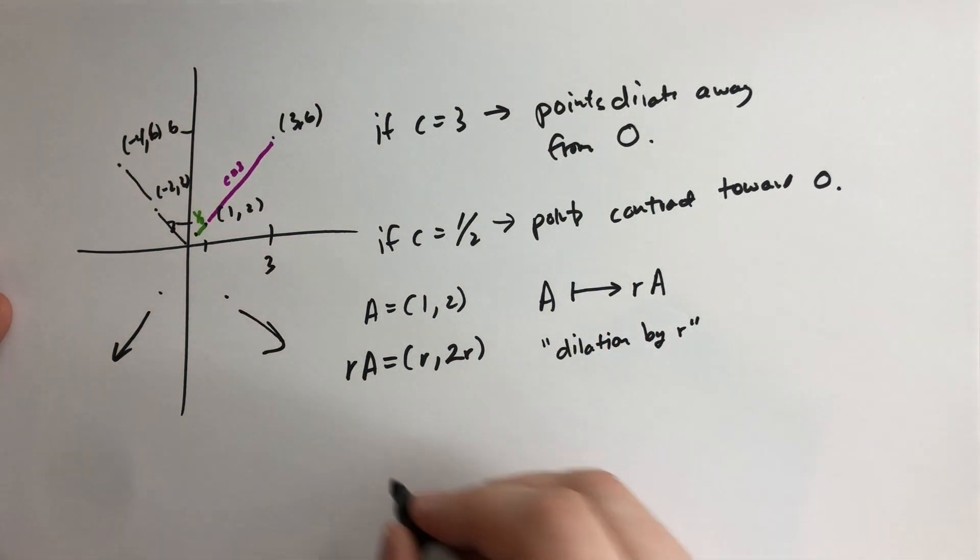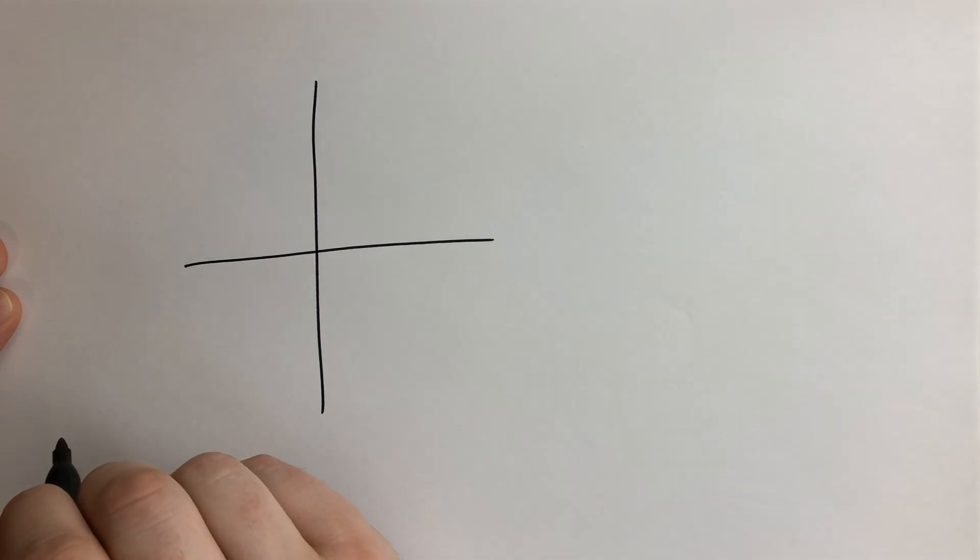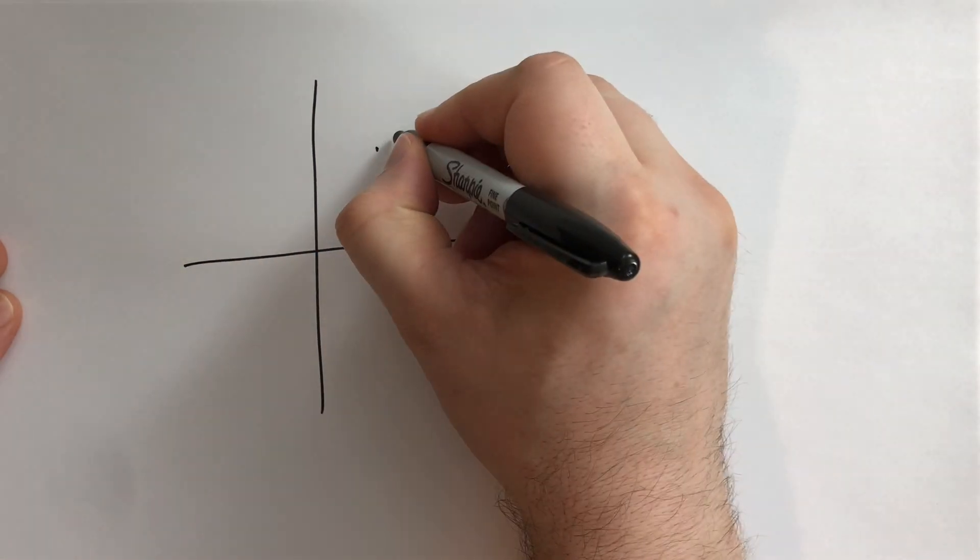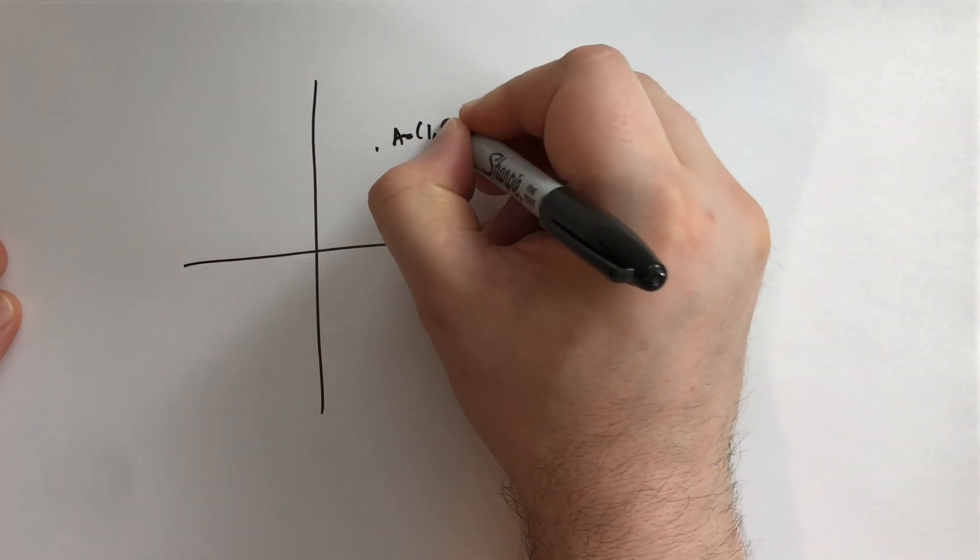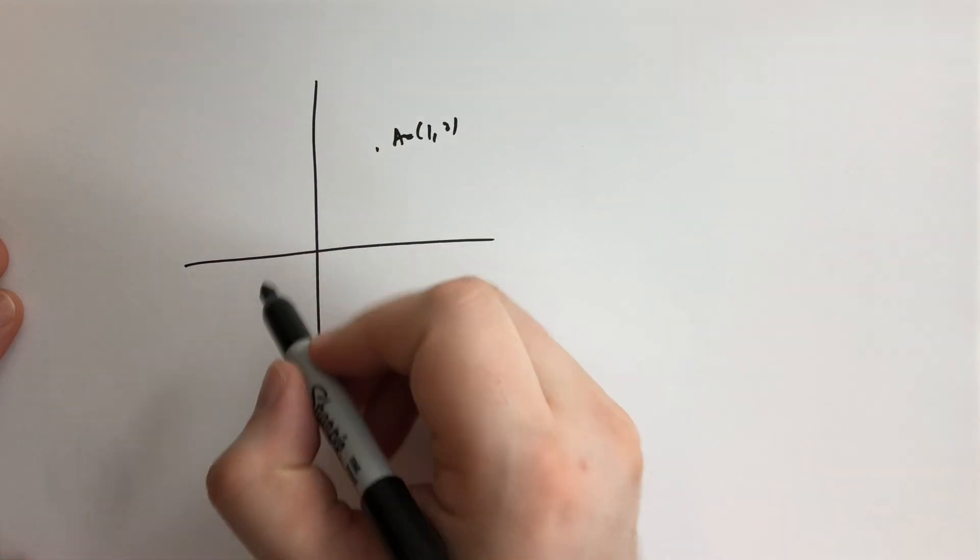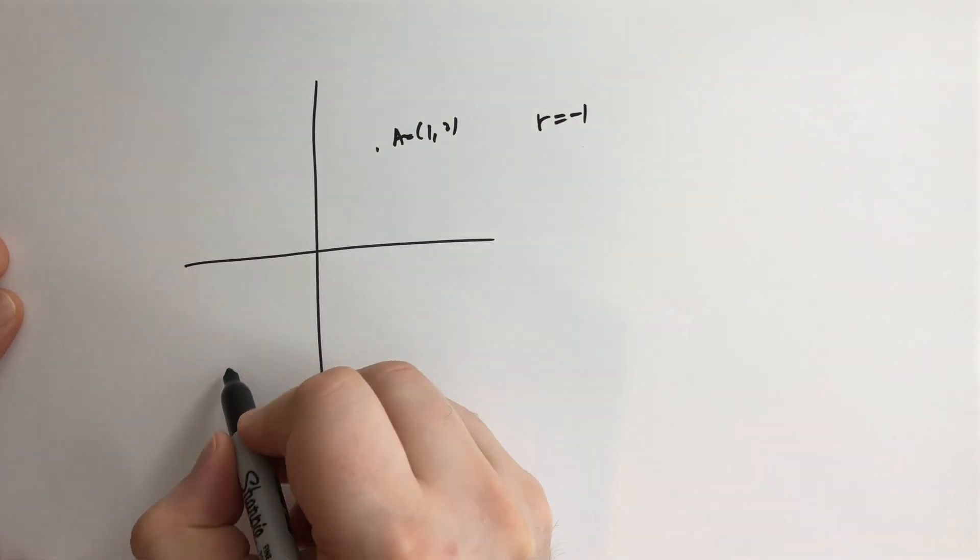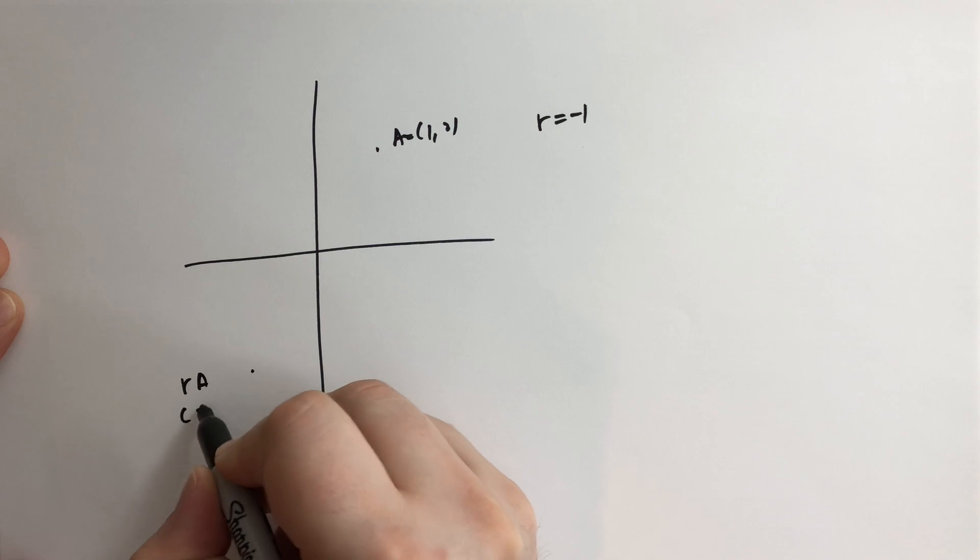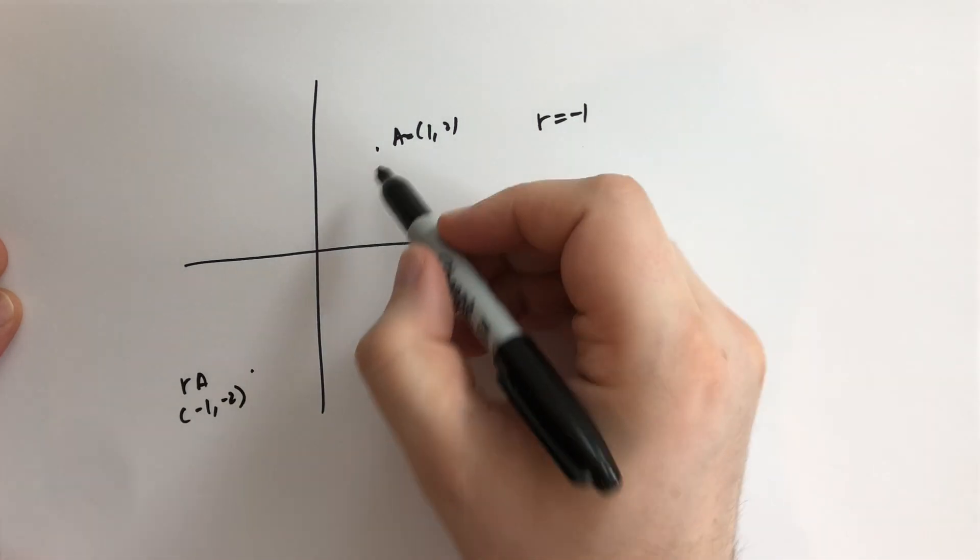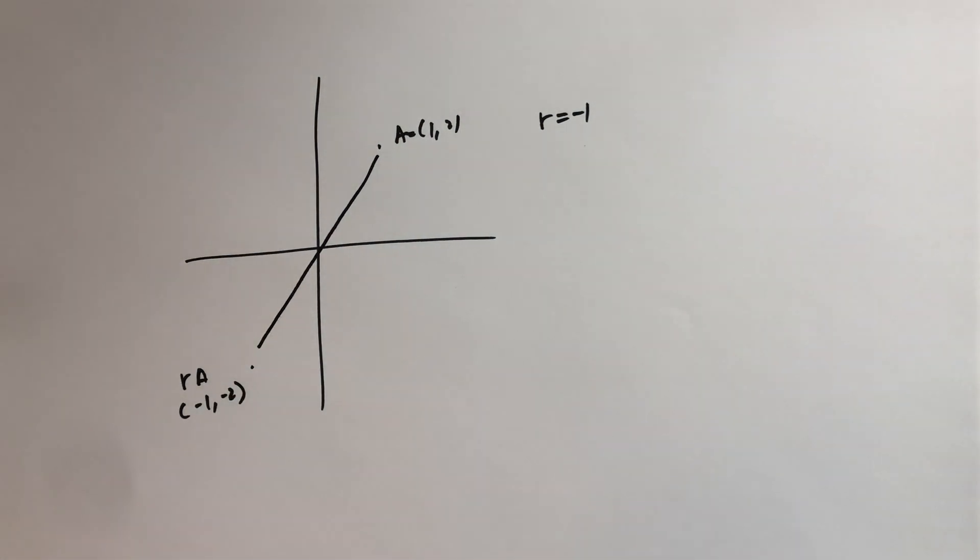What if we have R equals minus 1? Let's draw it and grab a new piece of paper. Let's play around with that. So here's our coordinate axes. Let's take the point A equals 1 comma 2. If we multiply by negative 1, so R equals minus 1, then RA is going to be down here, minus 1 comma minus 2. So we've basically taken this and we've reflected it through the origin.